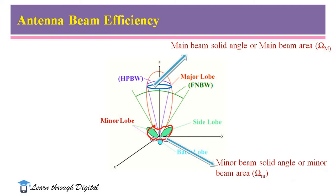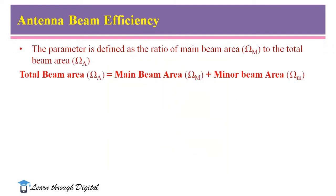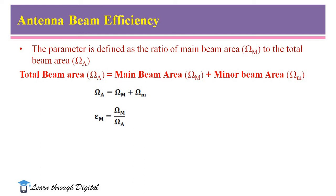The total beam area is the sum of main beam area and minor beam area. Antenna beam efficiency is defined as the ratio of main beam area to the total beam area. So omega_A equals omega_M plus omega_m, and eta_M equals the ratio of main beam area to the total beam area.